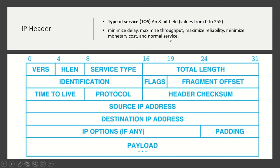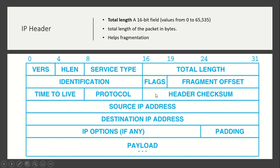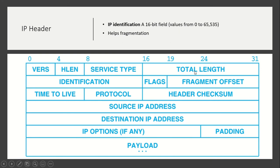Then service type — it is an 8-bit field that specifies what kind of service you want, such as minimized delay. Then comes the total length of the packet, which is placed in the next field. Then IP identification.